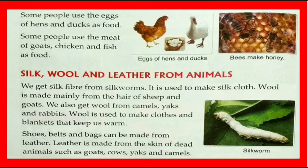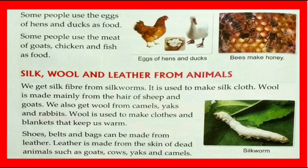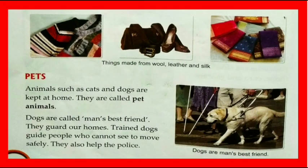Silk, wool, and leather from animals: we get silk fiber from silkworms, which is used to make silk cloth. Wool is made mainly from the hair of sheep and goats. We also get wool from camels, yaks, and rabbits. Wool is used to make clothes and blankets that keep us warm. Shoes, belts, and bags can be made from leather. Leather is made from the skin of dead animals such as goats, cows, yaks, and camels. In the image you can see silkworms, and things made from wool, leather, and silk.